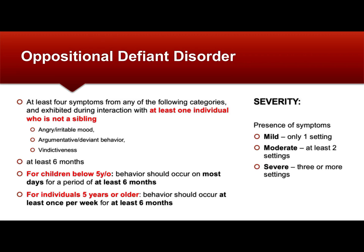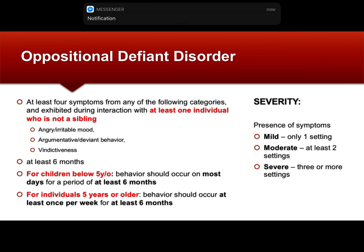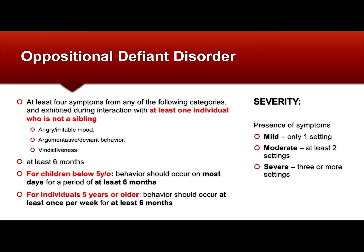The three categories are: angry or irritable mood, argumentative or defiant behavior, and vindictiveness. Unlike conduct disorder, which requires 12 months, this should be observable within a six-month period. There is also a difference based on age: for a child below five years old, the behavior should occur most days — about four or five days a week — within that six-month period. For individuals five years or older, it should occur at least once per week for the last six months.